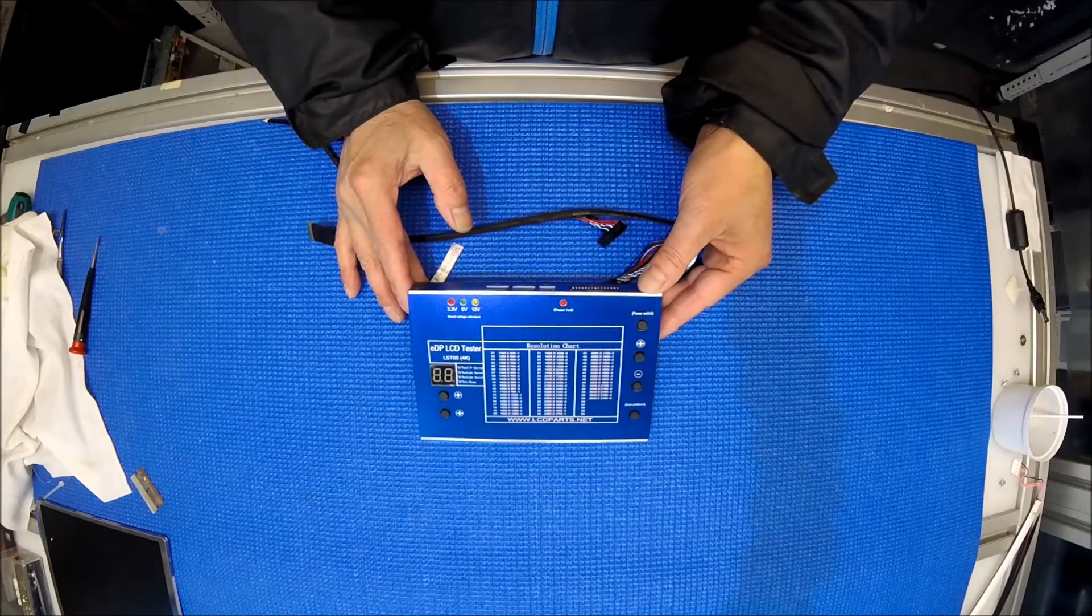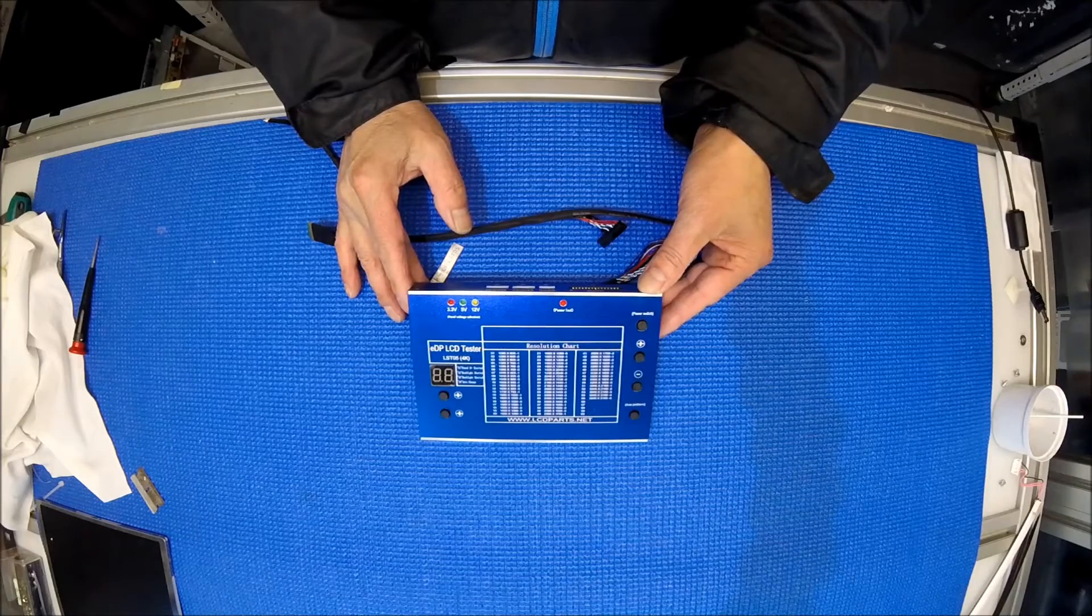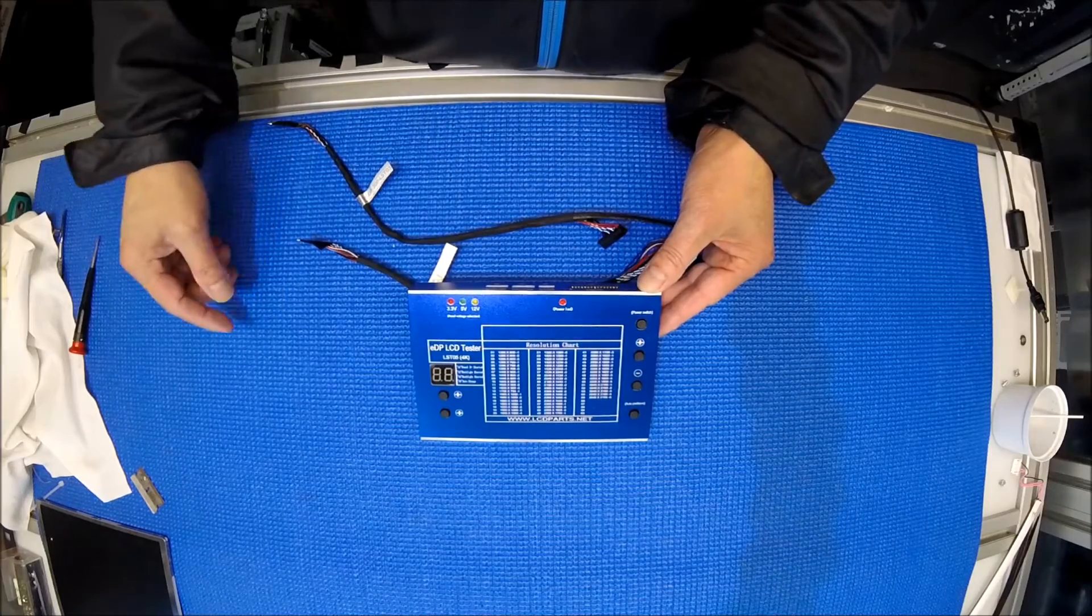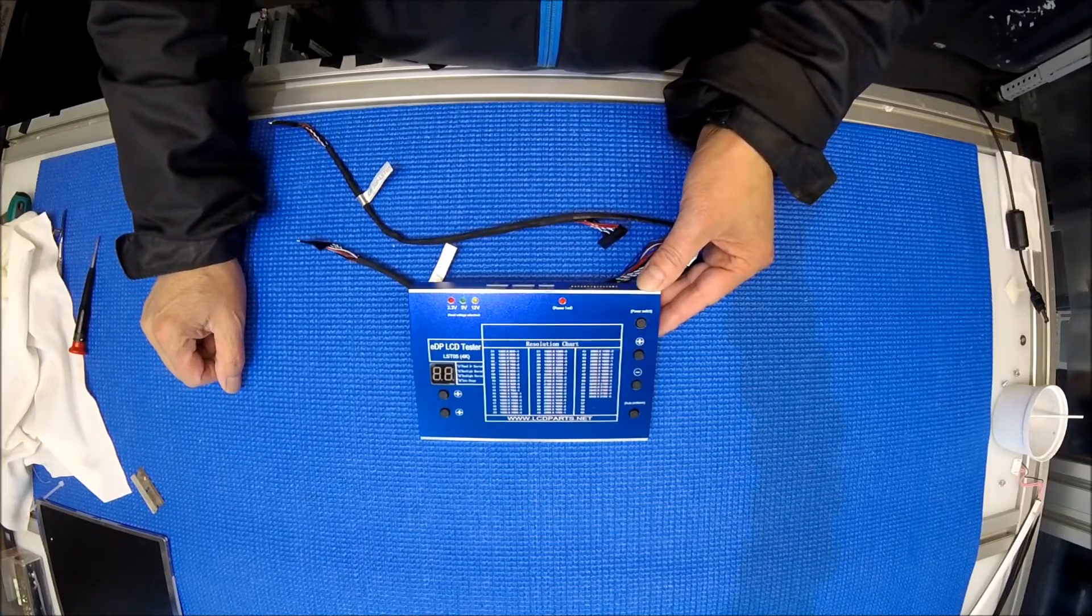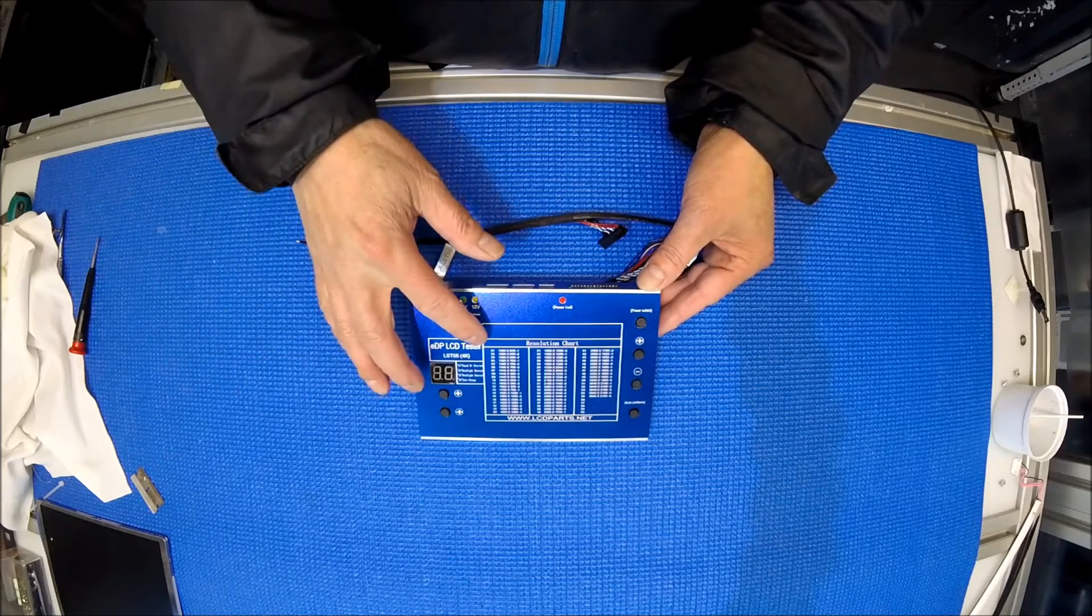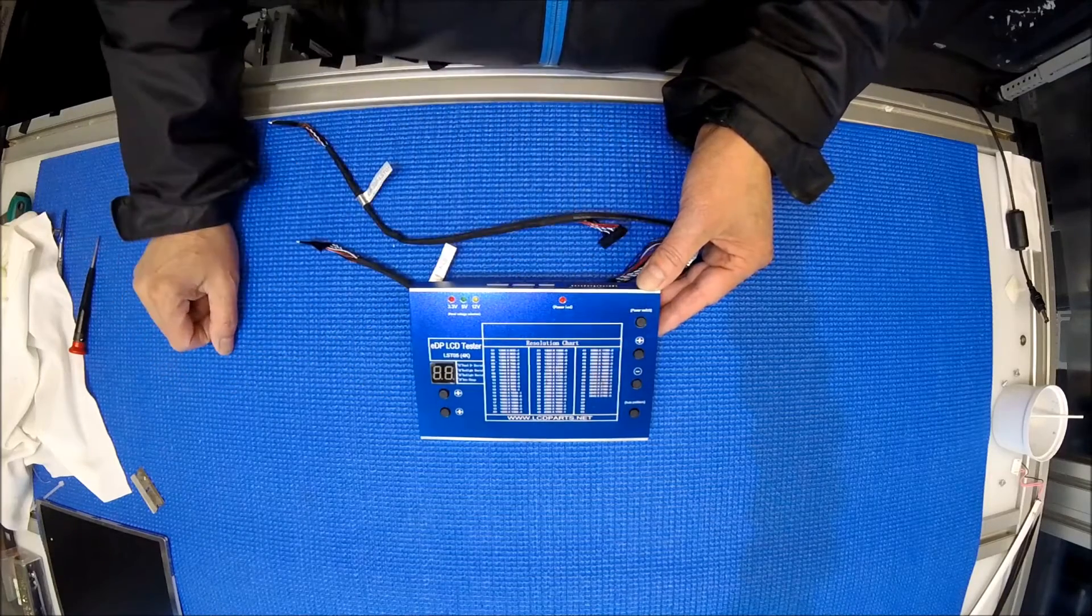If you have used our LST05 version 1, watch the video before the burgundy color, there's total 55 modes. So in order to change from mode 1 to 55, it takes some time.